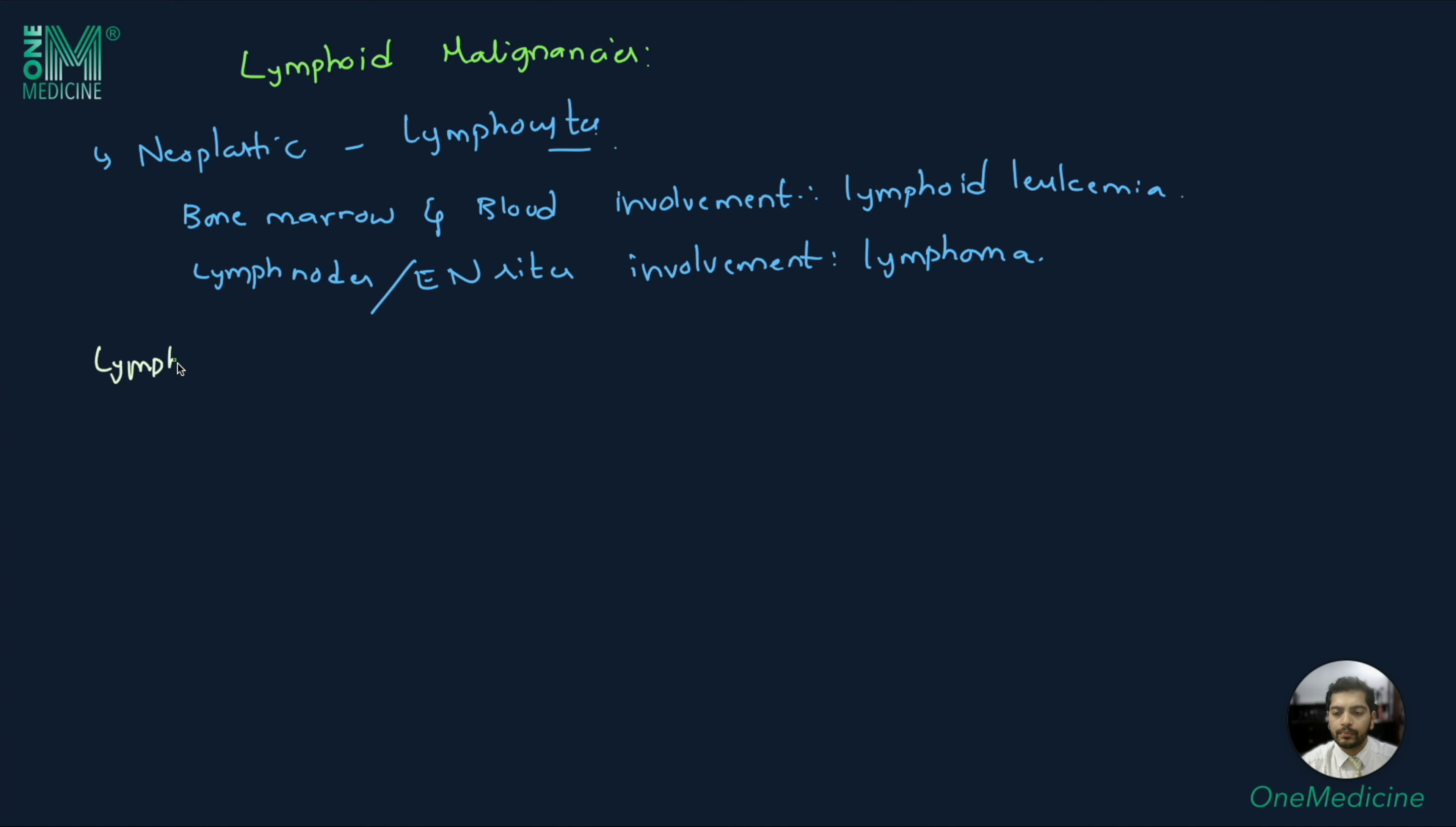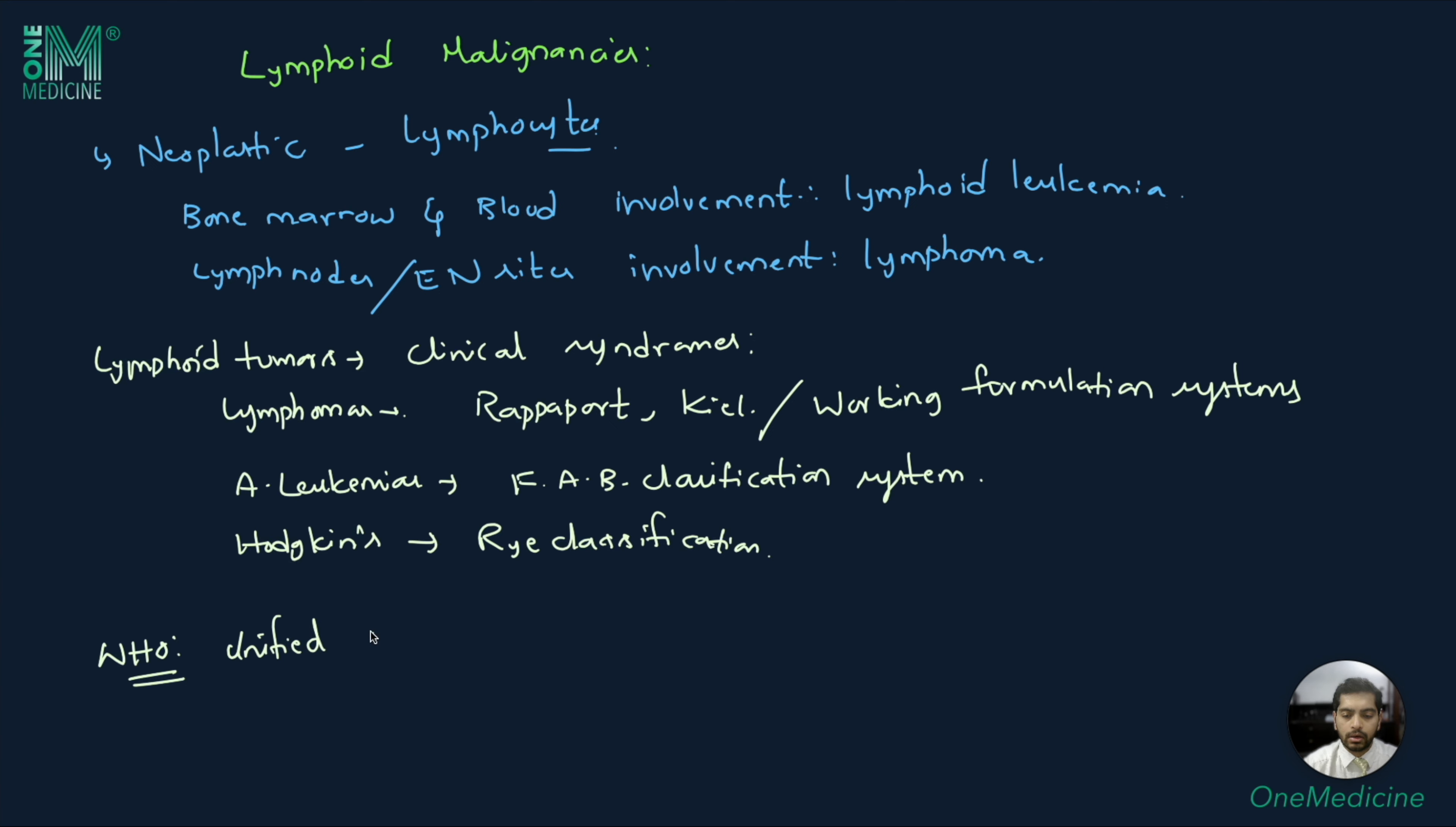Historically, lymphoid tumors are classified based on clinical syndromes. For example, lymphomas are classified according to Rappaport, Kiehl, or Working formulation systems, acute leukemias according to French-American-British classification system, and Hodgkin's disease according to Rai classification. But WHO has proposed a unified classification for all lymphoid malignancies.